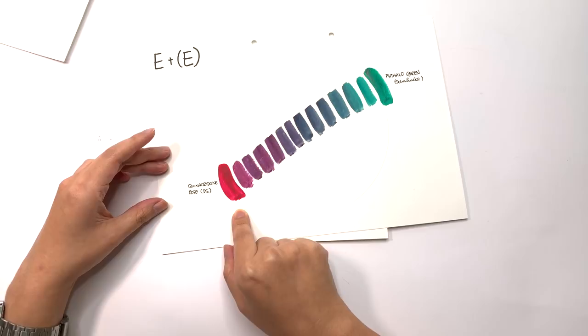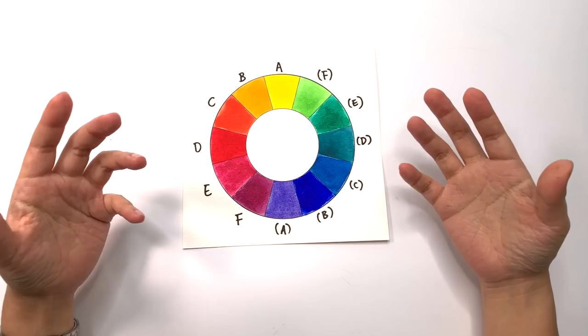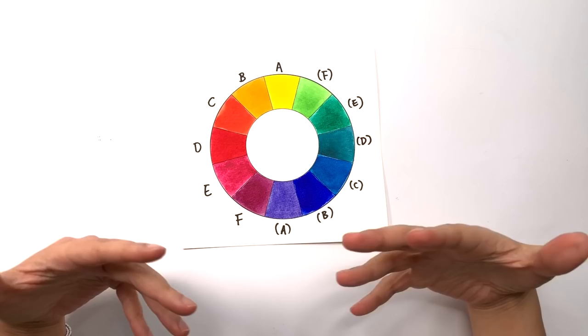When you are not happy with the colors in the color wheel palette, you are more than welcome to adapt and change it to suit your need. The way to do it is to do some color mixing tests. And this is what I did.